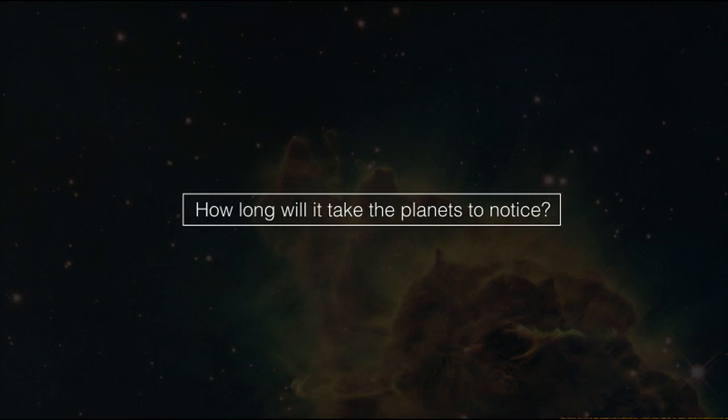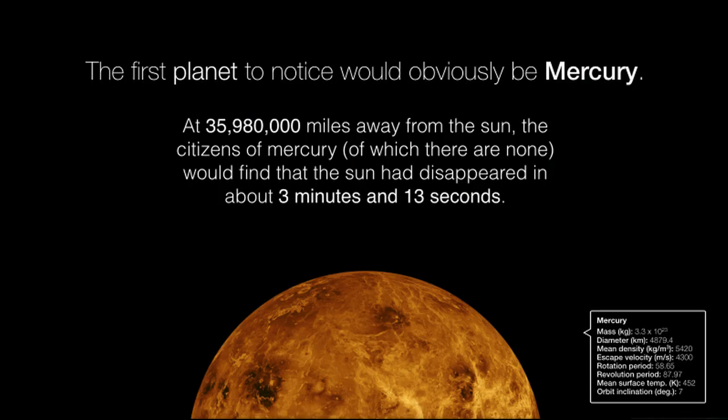How long will it take the planets to notice? The first planet to notice would obviously be Mercury. At 35,980,000 miles away from the Sun, the citizens of Mercury, of which there are none, would find that the Sun had disappeared in about 3 minutes and 13 seconds.